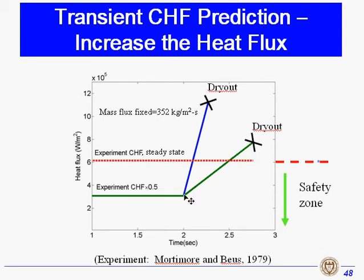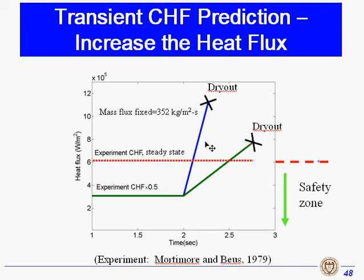Then we heat up the liquid film at two different rates — one higher (the blue line) and one lower (the green line). For the higher heat-up rate, dry-out occurs at a higher heat flux, and the lower heat-up rate results in dry-out at a lower heat flux. In both cases, the dry-out heat flux is higher than the steady-state critical heat flux.